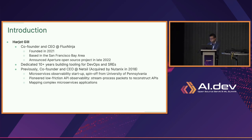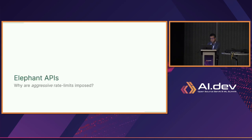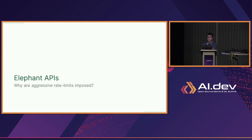Let's talk about generative AI and understand how fundamentally these workloads are different from anything we've seen in the past, and what the real challenges are in taking them to production. I'd like to throw out an analogy: we're really talking about mice versus elephant APIs.